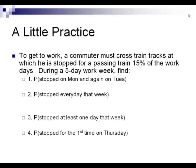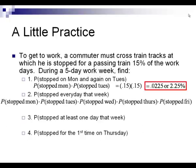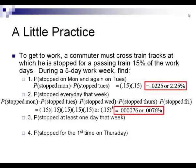Practice problems. Number 1: the probability of being stopped on Monday AND stopped again on Tuesday — 'and' means multiply. That's 0.15 × 0.15 = 0.0225, or a 2.25% chance. Number 2: the probability of getting stopped every day of a five-day week — 0.15 to the fifth power = 0.000076, or about a 0.0076% chance.